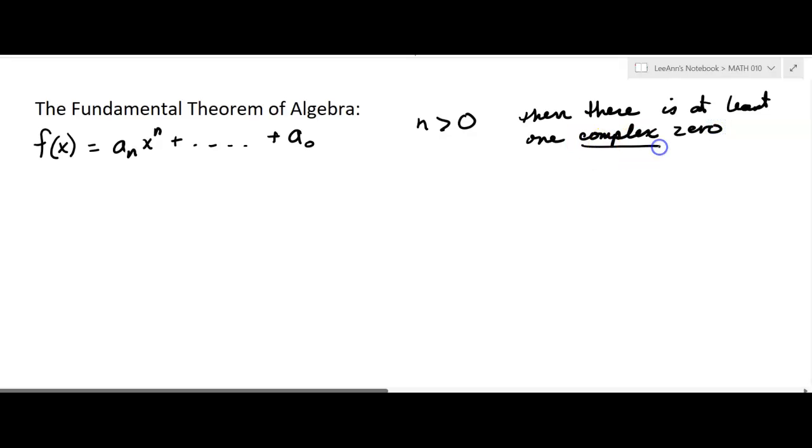Now by complex, they mean it could be a complex number. So that includes the set of numbers that we know, all your real numbers and your imaginary numbers.